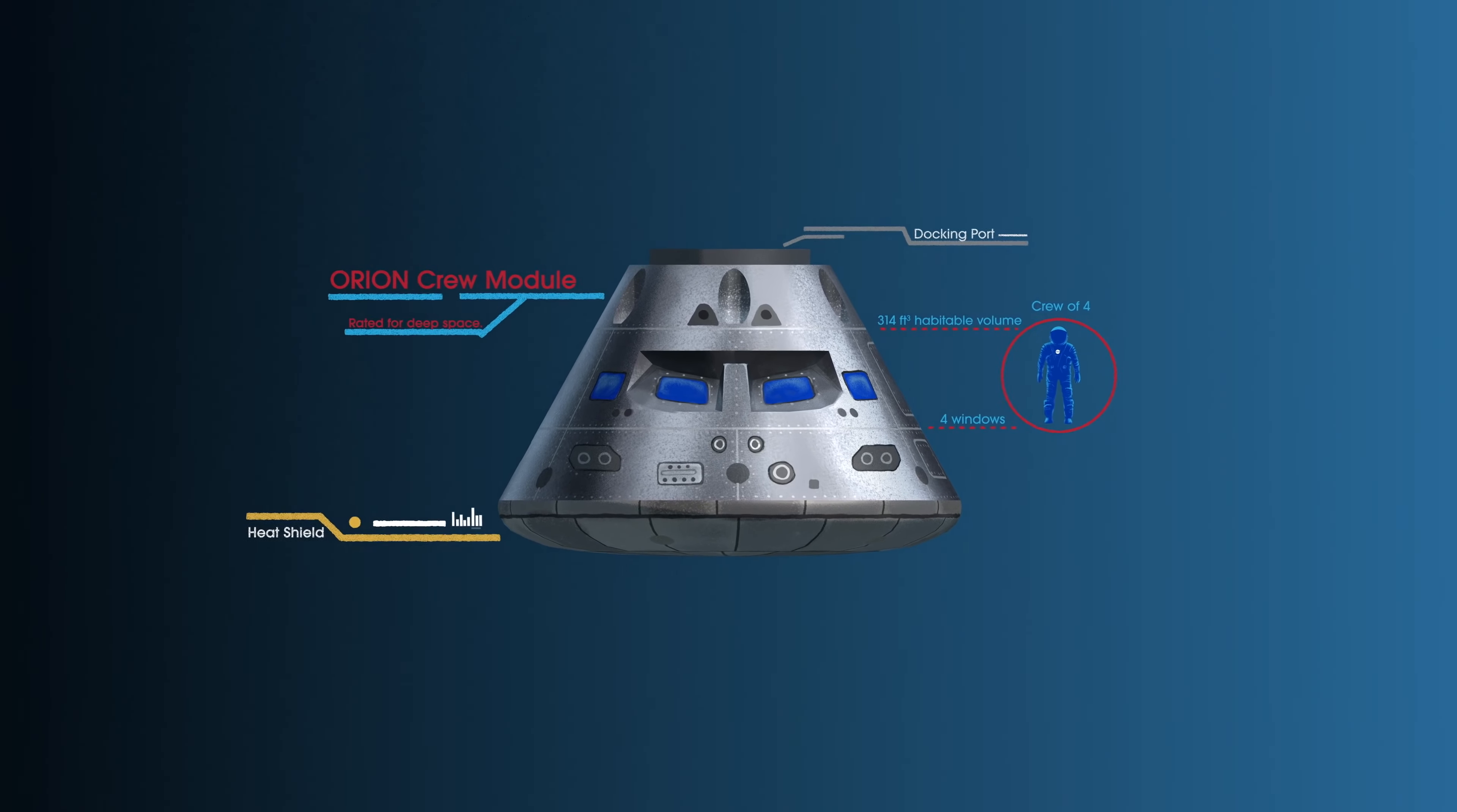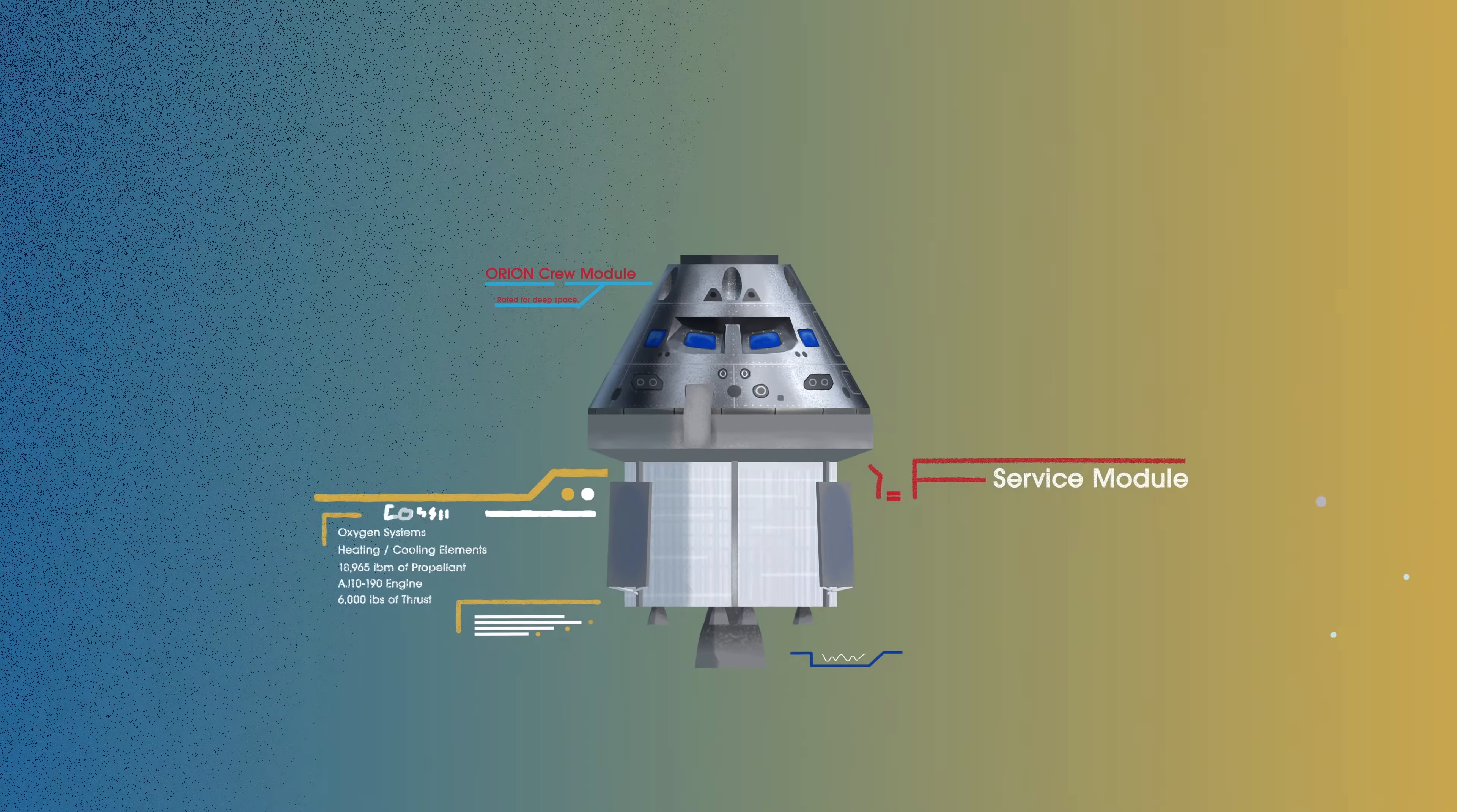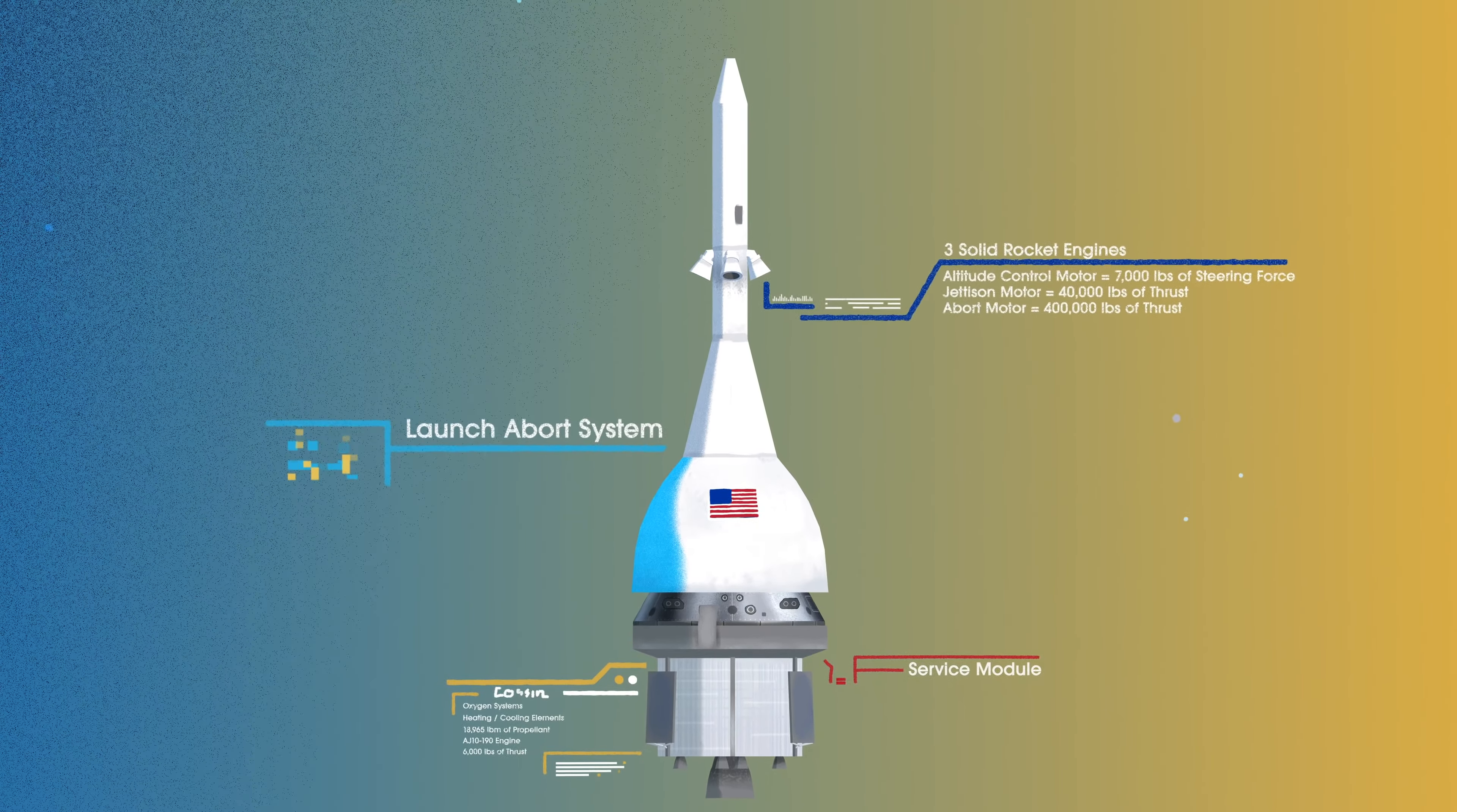The crew module, where up to four astronauts will live and work throughout the flight. The service module, with life-support systems for the crew and its own engine and fuel reserves, and a launch abort system, with engines capable of pulling the crew module to safety during launch should anything go wrong.